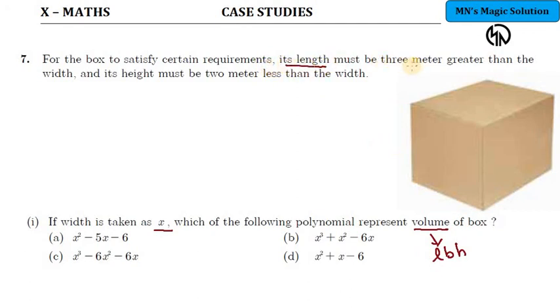Its length is 3 meters greater than the width. L, B, H are the three dimensions. They have taken width as x. Length must be 3 meter greater than width, so x plus 3. Height must be 2 meter less than the width, so this should be x minus 2. These are the 3 dimensions L, B, H.